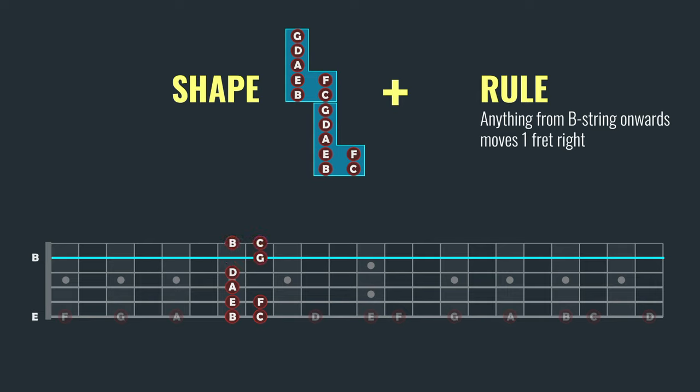Let's do another one. We'll take this D and overlay our shape, positioning the D in the shape right over the D on the fretboard. We then repeat the pattern, and just as before, we then shift everything from the B string onwards over one fret.